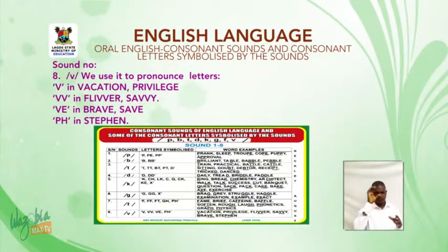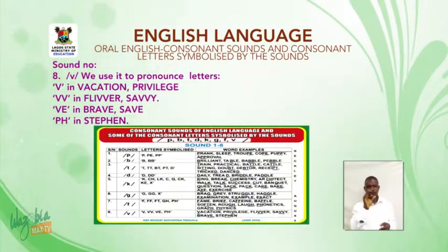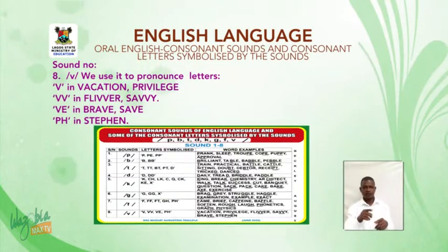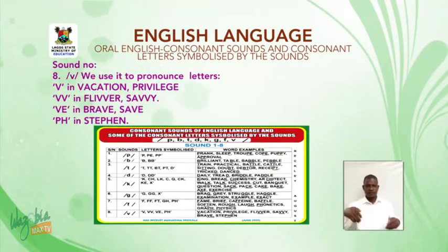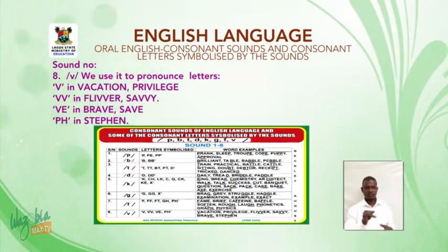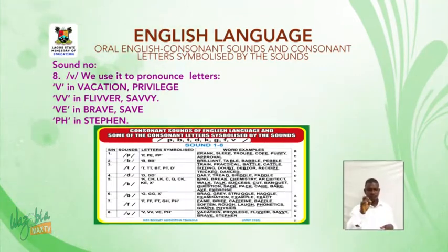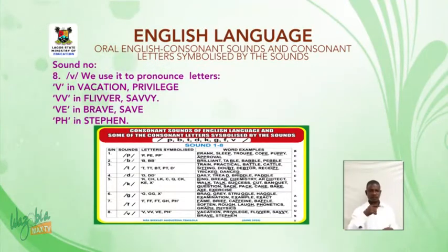Sound number eight: /v/. We use it to pronounce letters V in vacation, privilege; VV in flavor, savvy; VE in brave, save; and PH in Stephen.